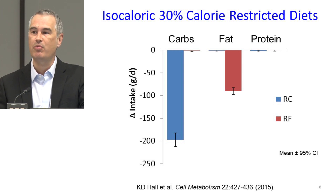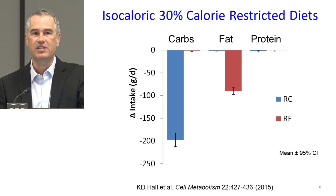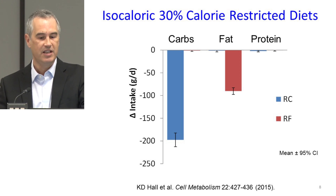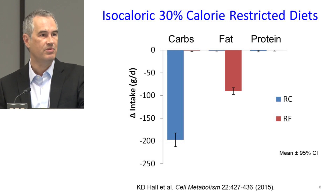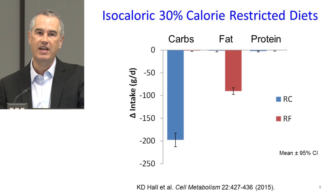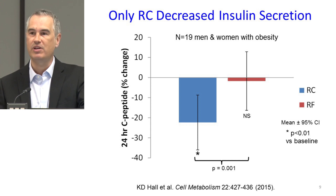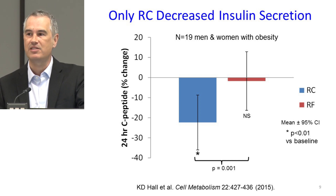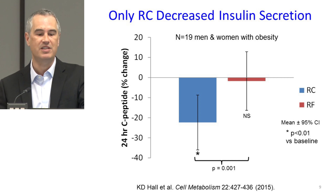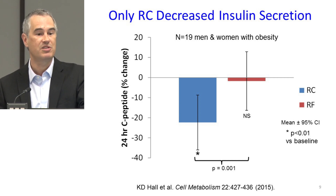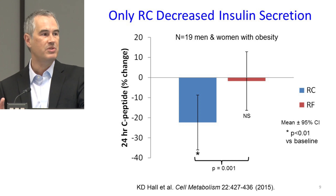We made certain predictions about what would happen to body fat, metabolic fuel utilization, and energy expenditure. One prediction of the carbohydrate-insulin idea is that only the reduced-carb diet should lead to a reduction in insulin secretion, since dietary fat doesn't play a big role in changing insulin secretion. And indeed, that's what we observed. The reduced-carbohydrate diet led to a more than 20% reduction in insulin secretion as measured by C-peptide excreted in the urine — a molecule co-secreted with insulin and cleared entirely by the kidney, giving us a 24-hour measure of insulin secretion. So we'd set the conditions to test whether insulin secretion reduction was required to lose body fat.